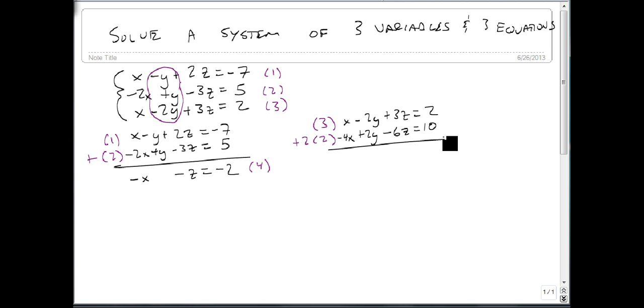So now we add these together. x minus 4x is minus 3x. Minus 2y plus 2y goes away. 3z minus 6z is minus 3z, and 2 plus 10 is 12. Here's equation 5.